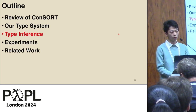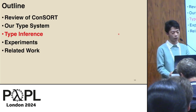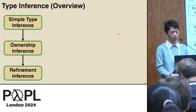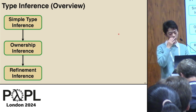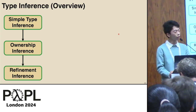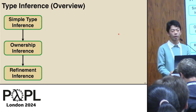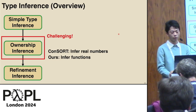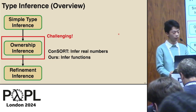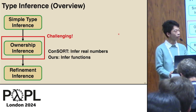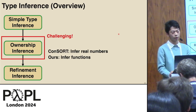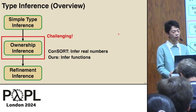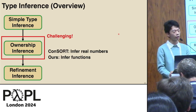Next, let me explain our type inference procedure, which serves as an automated verification procedure. This is an overview of our type inference process. The overall flow is the same as consort, but please note that the second step of ownership inference is much more challenging because we have introduced ownership functions. In fact, this part is one of the main contributions of our work, so I will focus on explaining this part.